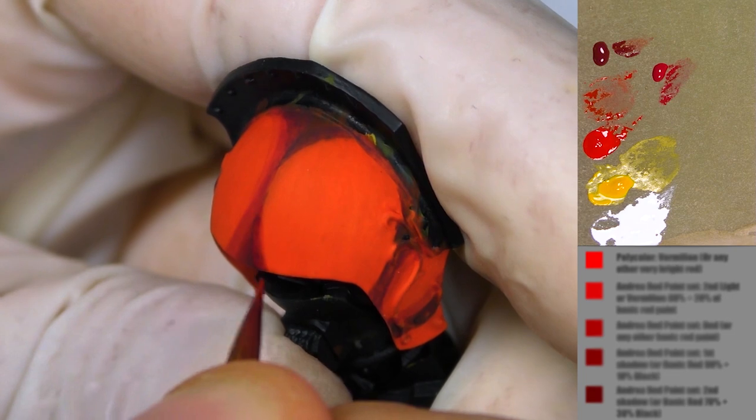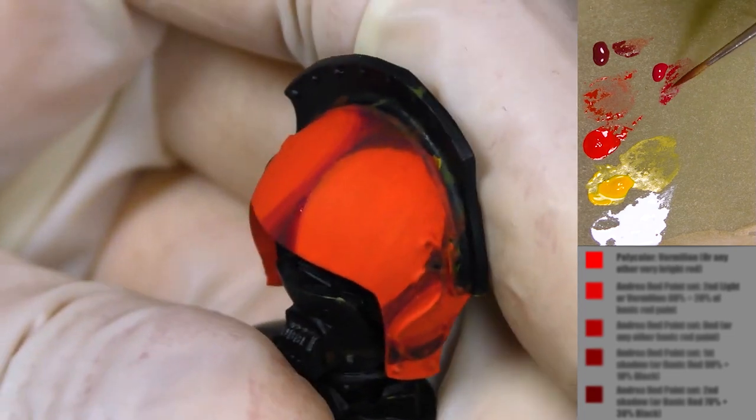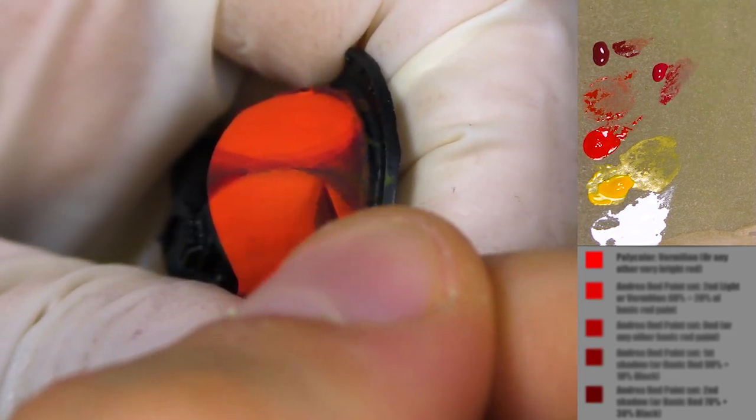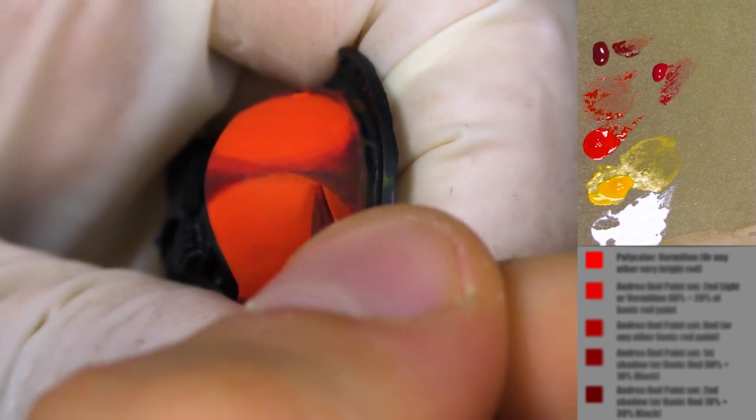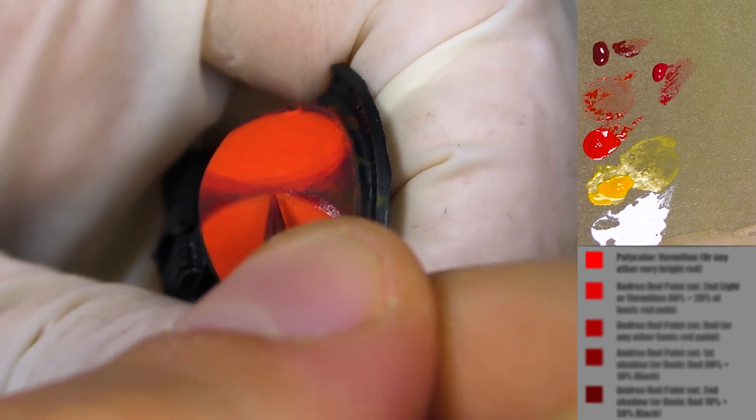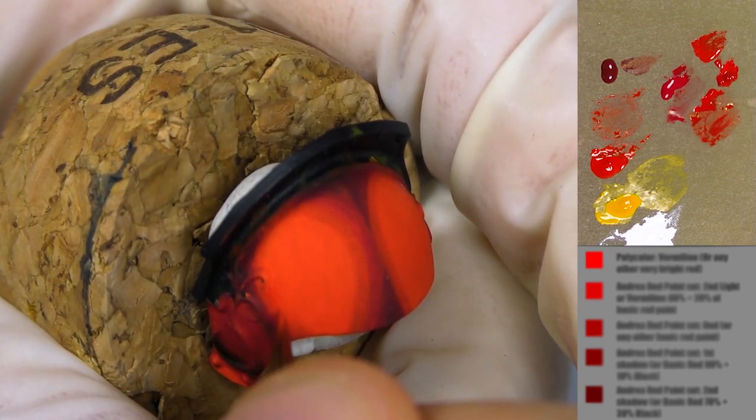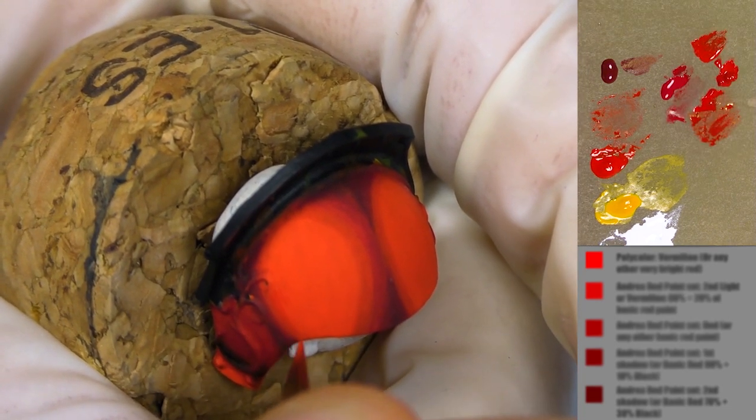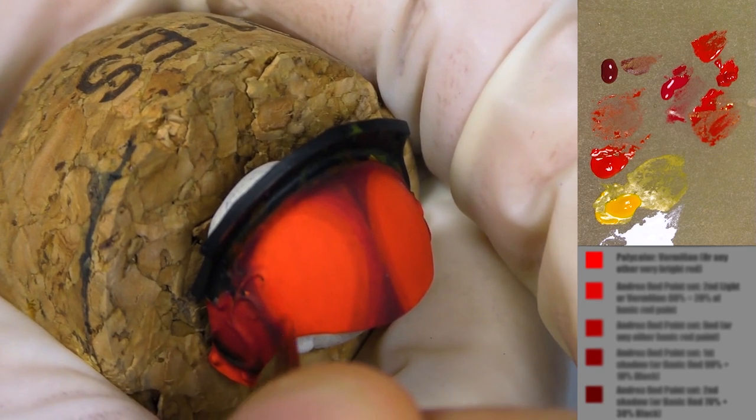Because here I need similar, not identical, because here I need bigger part close to the middle to be bright red. One cannot move without another. I'm trying to go with the shape.